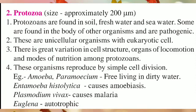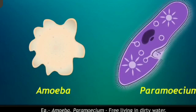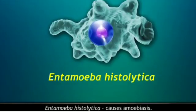Let us move towards protozoans. Protozoans are found in soil, freshwater, and seawater. Some are found in the body of other organisms and are pathogenic. These are unicellular organisms with eukaryotic cells. There is great variation in cell structure, organs of locomotion, and modes of nutrition among protozoans. Examples: amoeba and paramecium.